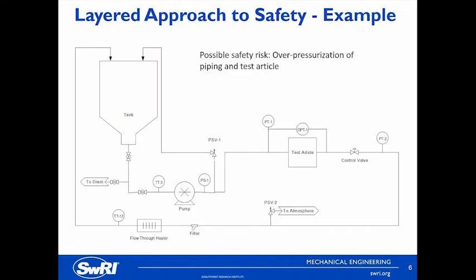Now I'm going to go through a basic example. This is a very simple process and instrumentation diagram — we call them P&IDs. Here you can see a tank. The purpose of these diagrams is to show the general layout of the equipment, not the physical location of everything. It shows that the pump comes first, then the test article, etc. Fluid flows from the tank through the pump, past a temperature transmitter upstream and a pressure switch downstream, through a test article, a control valve where you might meter or control the pressure and flow rate, downstream pressure, then through a filter and maybe a flow-through heater. We can assume this is a positive displacement pump that will continue to build pressure if a flow path is blocked. So our possible safety risk here is overpressurization of the piping and the test article.